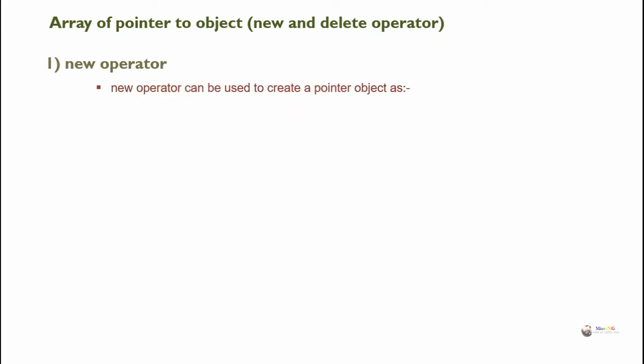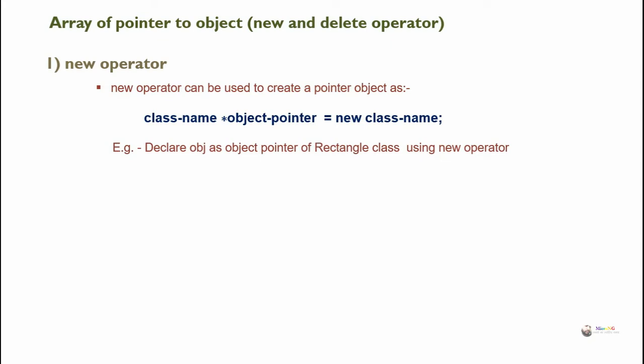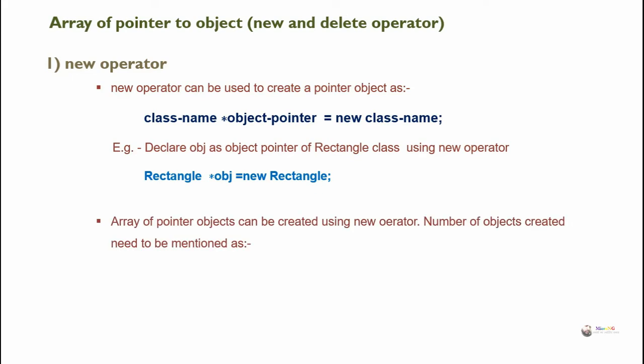An array of pointer objects can be created using the new and delete operators. The new operator can be used to create a pointer object as: class name asterisk object pointer equal new class name. For example, to declare obj as an object pointer of the rectangle class using new operator: rectangle star obj equal new rectangle. An array of pointer objects can also be created using new operator, mentioning the number of objects within square brackets.